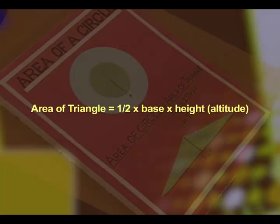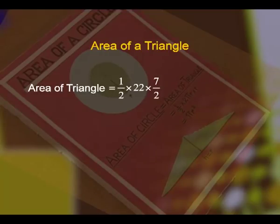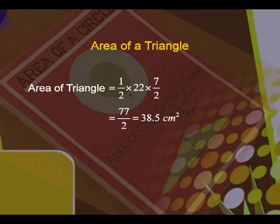Now let us verify this mathematically. We know that the area of the triangle is half of base into height. The base was 22 centimeters and the height was equal to the radius, that is 7/2 centimeters. So we get 77/2, thus the area will be equal to 38.5 centimeter square.